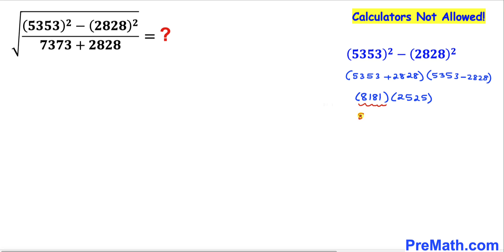Now let's focus on this 8181. This could be written as 81 times 101. Likewise, this 2525 could be written as 25 times 101 as well.